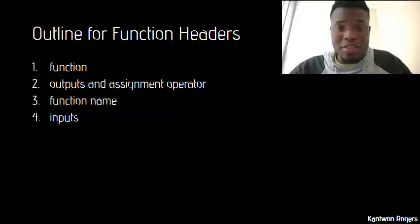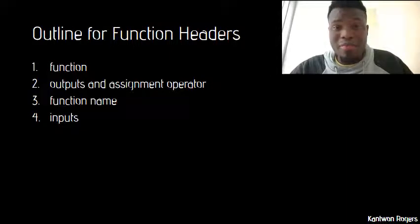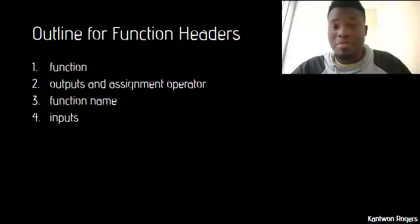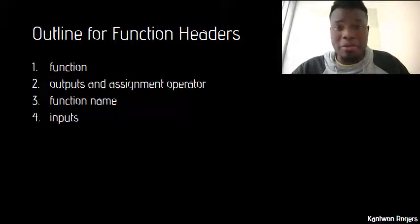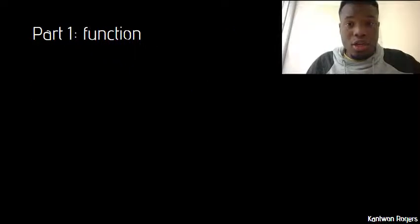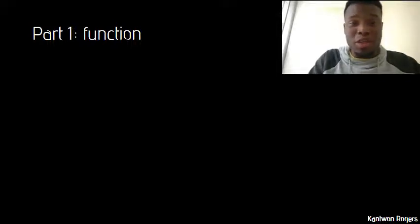The outline of every function header is as follows. First, you have the word 'function' — you have to tell MATLAB that you're writing a function. Then after that, you have the name of the variables you want your function to output. After that, you have the name of your function. And then lastly, you have the name of the variables to be used as inputs. The only rule for the first part is that the word 'function' must be in all lowercase.